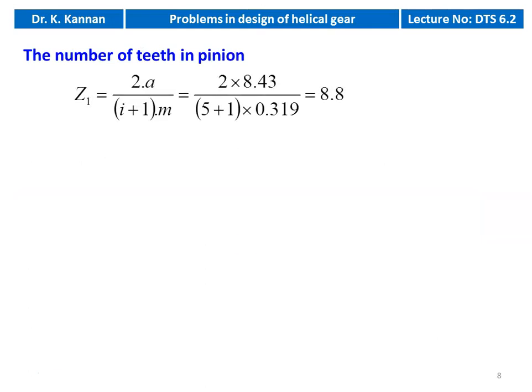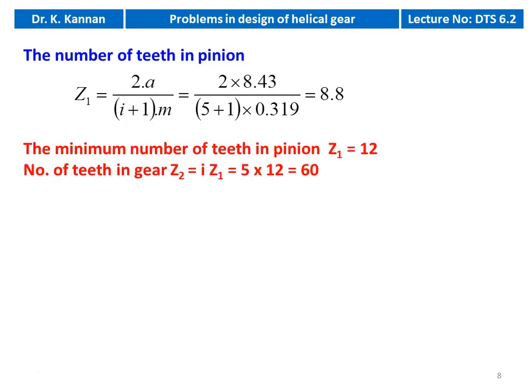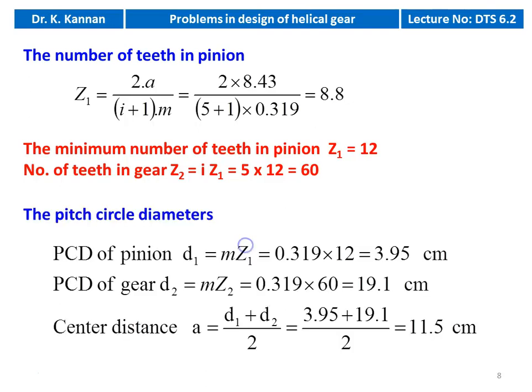The number of teeth on the pinion: Z1 = 2A / [(i+1) × m] = 2 × 8.43 / [(5+1) × 0.319] = 8.8. This is very low, so we take the minimum Z1 = 12. Number of teeth on the gear: Z2 = i × Z1 = 5 × 12 = 60. PCD of pinion d1 = m × Z1 = 0.319 × 12 = 3.95 cm. PCD of gear d2 = 0.319 × 60 = 19.1 cm. Center distance a = (d1+d2)/2 = (3.95+19.1)/2 = 11.5 cm.